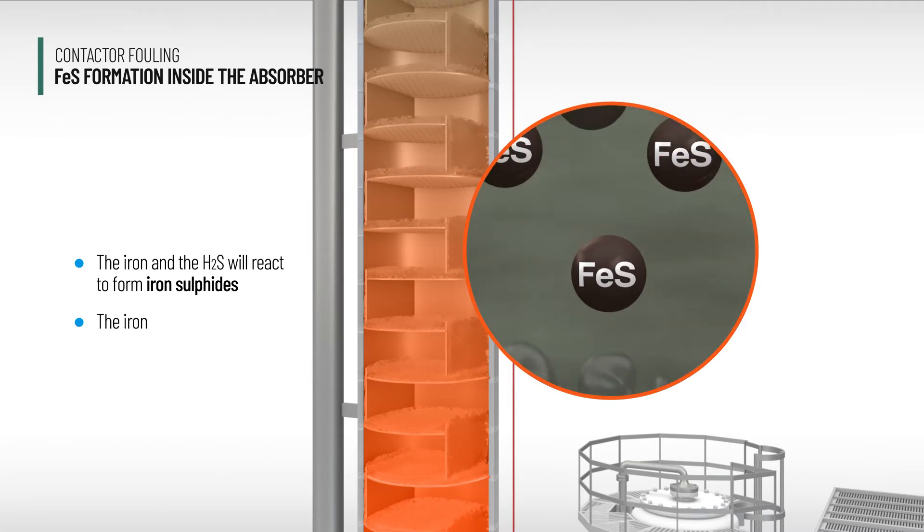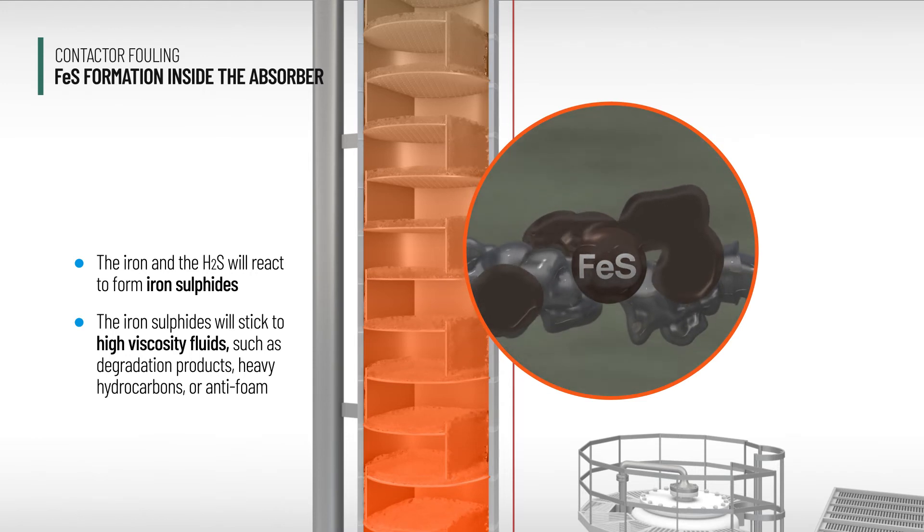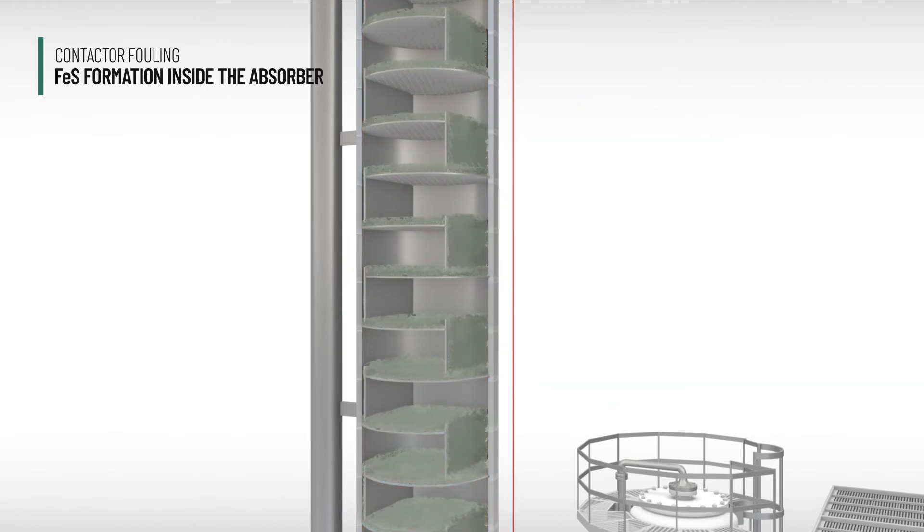The iron sulfides will stick to high viscosity fluids such as degradation products, heavy hydrocarbons, or anti-foam and form a thick black sludge.